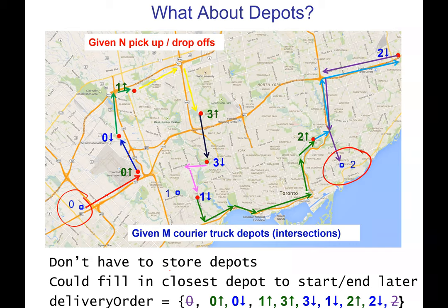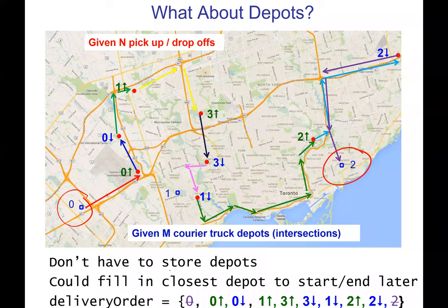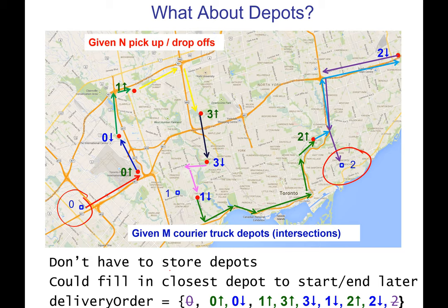This basically gives you an idea of how to store your solution so you can rapidly perturb it. If you can quickly change the order of these deliveries and drop-offs and quickly evaluate what is the resulting travel time and whether it's legal, then you can try a lot of perturbations — hundreds of thousands, millions — in that 45 seconds and hopefully get a better answer. On Thursday I'll show you with this representation what these perturbations actually look like in code, like swapping two pickups or drop-offs or doing a two-opt — and it can be pretty directly coded to modify this representation and be quite fast.